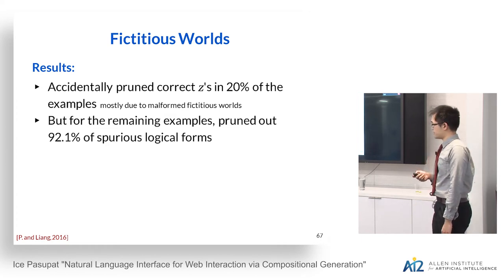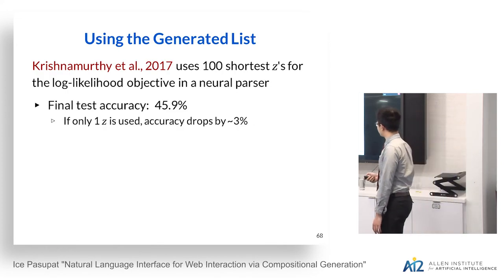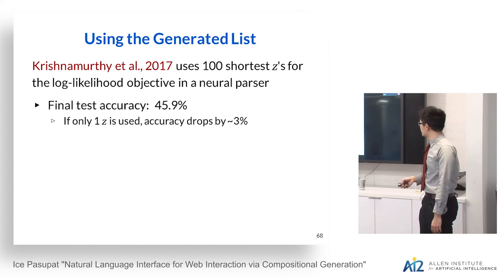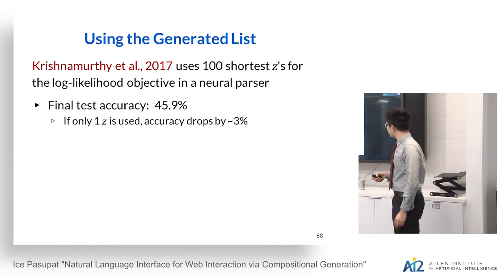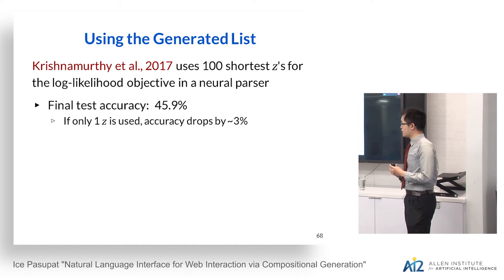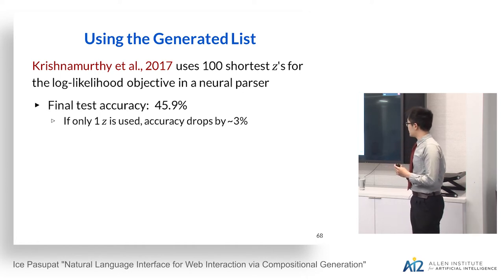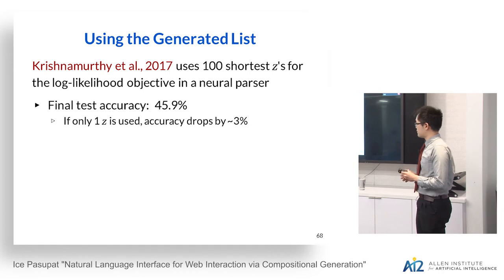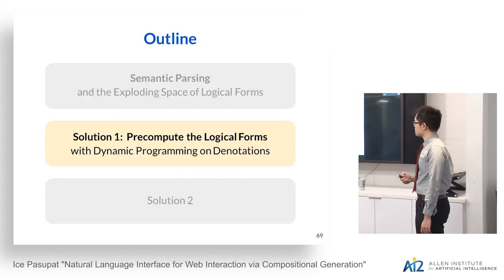With this list of generated logical forms, there is work by Jayan Pradeev and Matt Gardner that uses the 100 shortest logical forms we generated to train a neural parser with a log-likelihood objective over that list. With this approach, the final test accuracy reaches 45.9%.